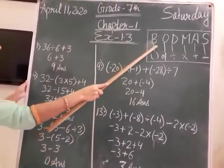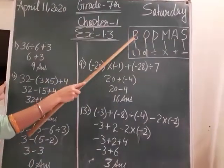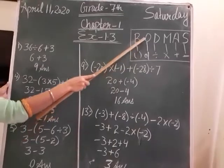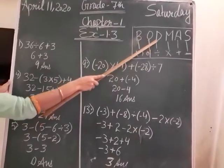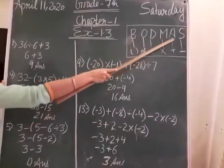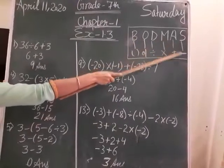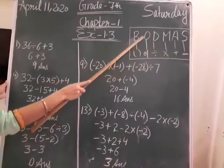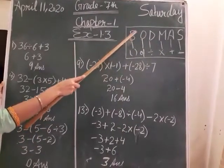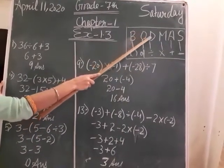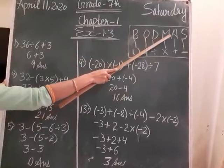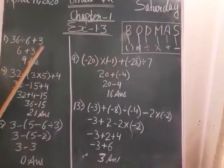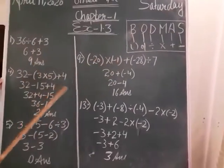We will use the BODMAS formula here. B means Bracket, O means Of, D means Division, M means Multiply, A means Addition, S means Subtraction. It means we have to use BODMAS — firstly we solve the bracket, then Of, then Division, then Multiply, then Addition, and then Subtraction for solving any type of statement.